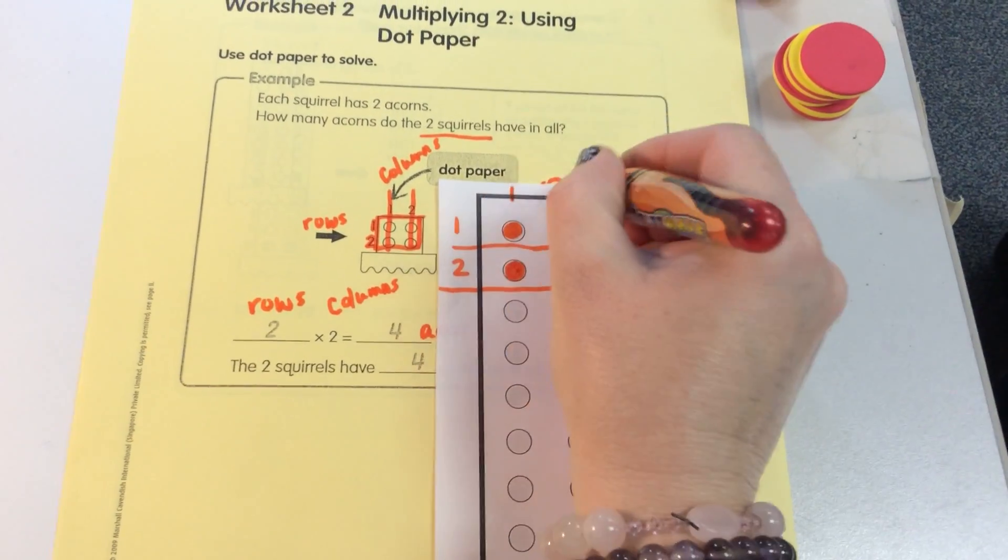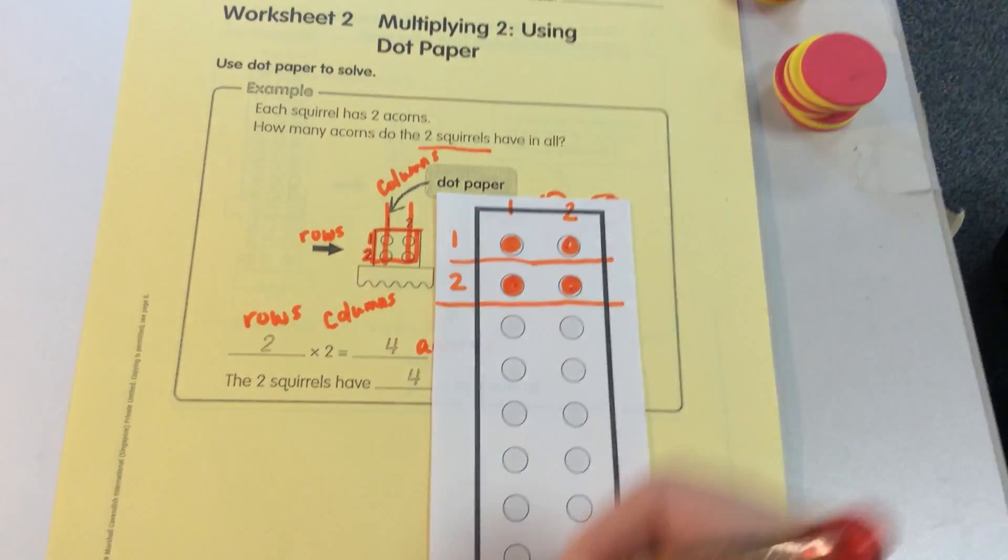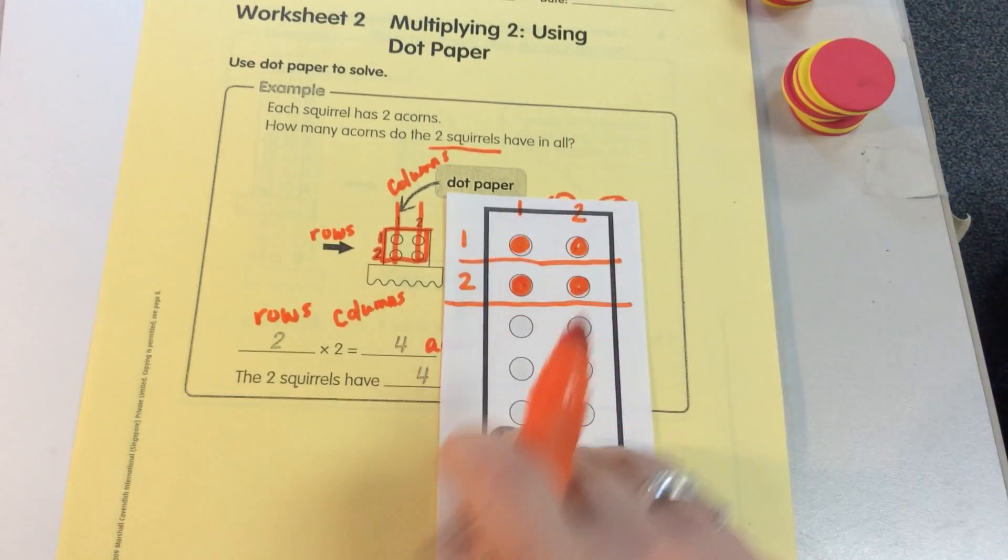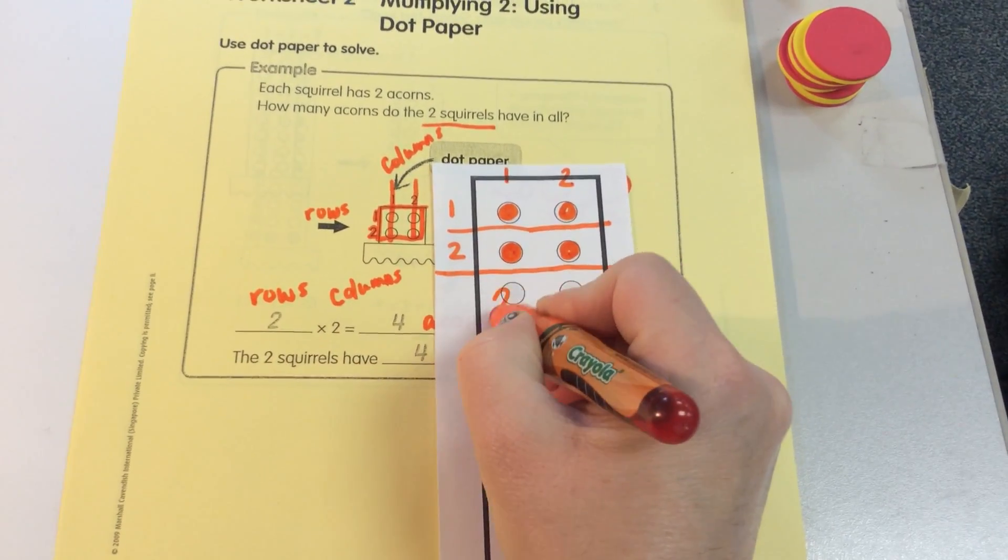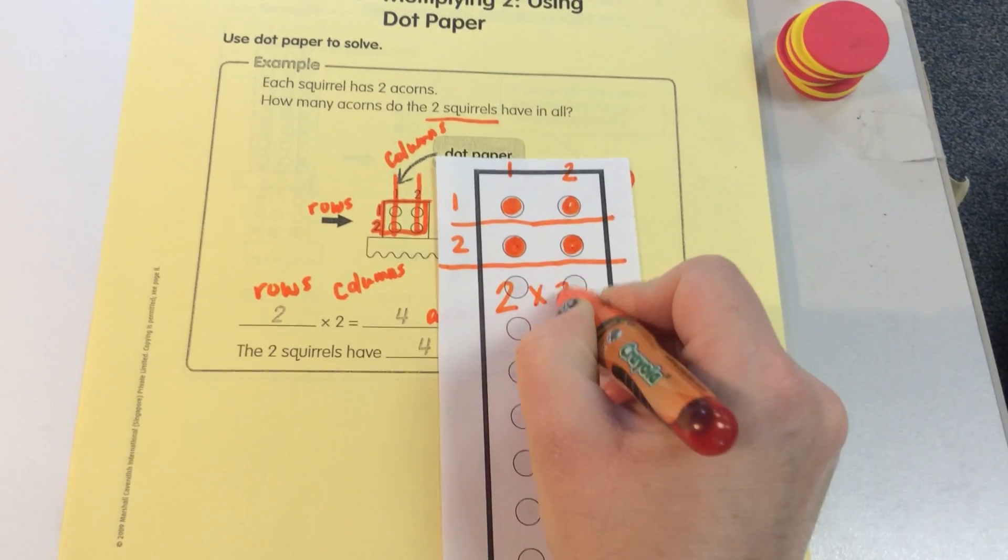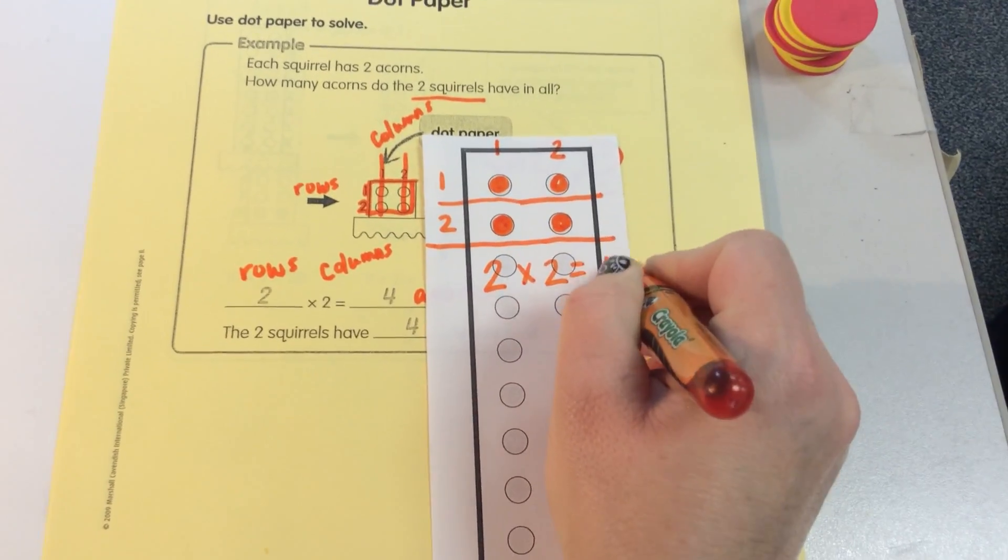And these are the columns. So column 1, column 2. Now. So we see here 2 rows, 2 columns is equal to 4.